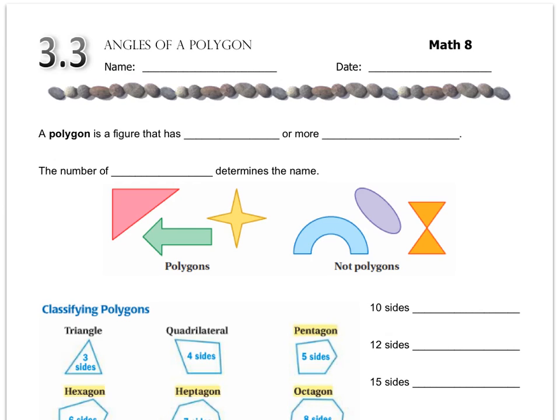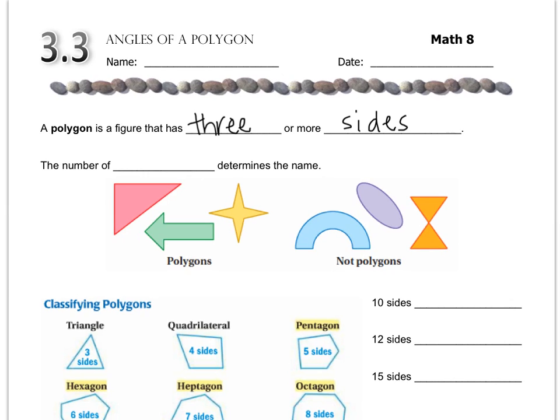A polygon is a figure that has three or more sides. So a triangle is the smallest type of polygon, and then obviously more sides makes larger and larger polygons. The number of sides determines the name.